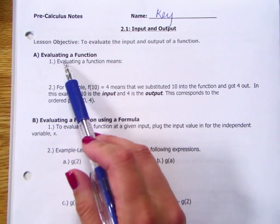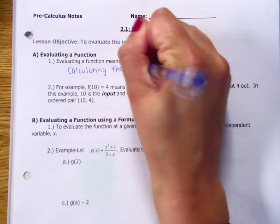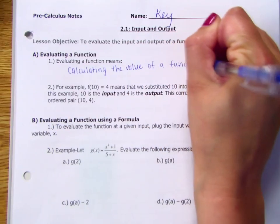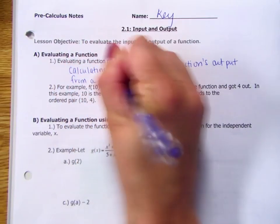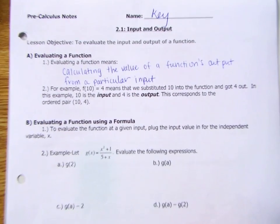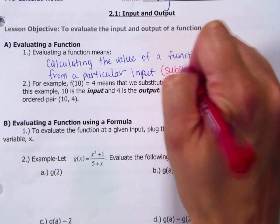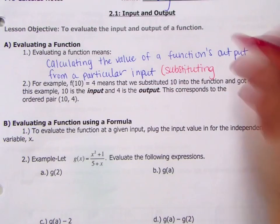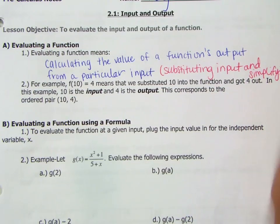When we talk about evaluating a function, what this means is that we are calculating the value of a function's output from a particular input. So when I say evaluate a function, I would have to give you what I want you to evaluate it with what input. So evaluate this function when x is 5. That means we would substitute the 5 in and simplify. So we're basically substituting the input and simplifying to get our output. We've done that.